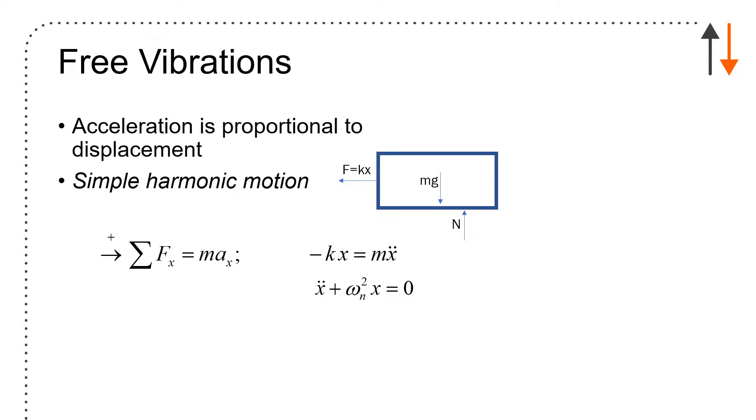Acceleration is proportional to displacement, so F = ma = mx double dot. I can write out all the terms: the force driven by the spring, the acceleration of the system, and I'll end up with a governing equation. x double dot plus k over m x equals zero, or x double dot plus omega_n squared x equals zero.